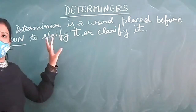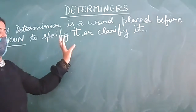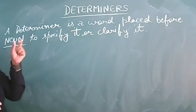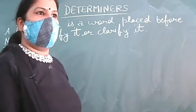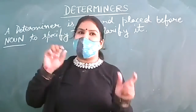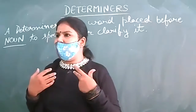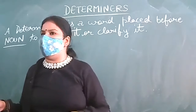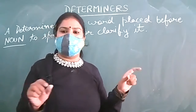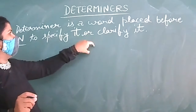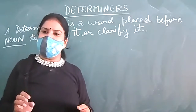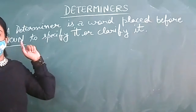It determines the quantity of a noun — it specifies or clarifies how much, how many, less, little, few — in that way. If I say I have many umbrellas but I'm not able to find any of them, 'many' and 'any' are both specifying and clarifying something about the noun 'umbrella'.